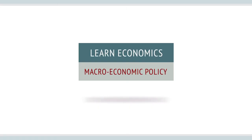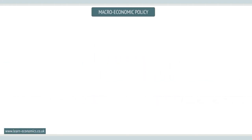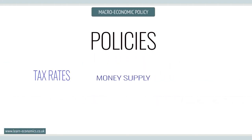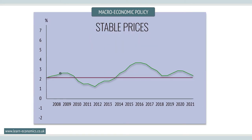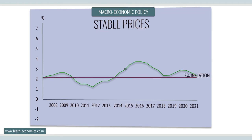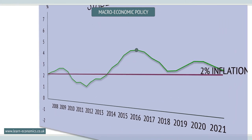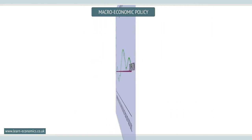Macroeconomic policy: Governments and other policy makers have at their disposal a wide array of individual policies to help them achieve their objectives, which include maintaining a stable price level — keeping the rate of inflation within certain limits, typically around 2% per year in most countries.